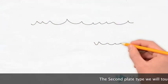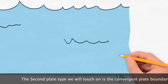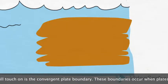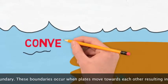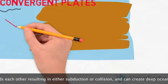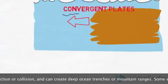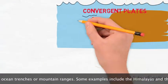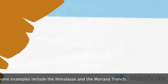The second plate type we will touch on is the convergent plate boundary. These boundaries occur when plates move towards each other, resulting in either subduction or collision, and can create deep ocean trenches or mountain ranges. Some examples include the Himalayas and the Mariana Trench.